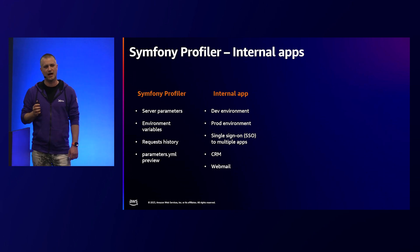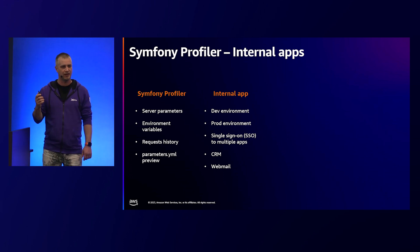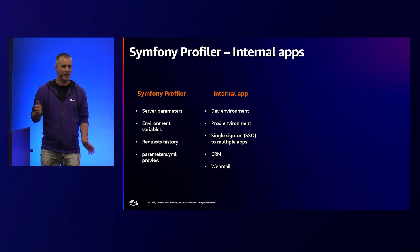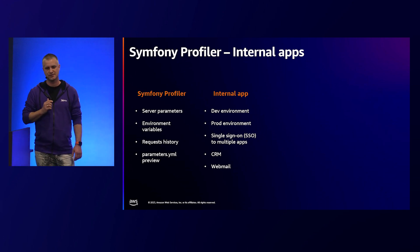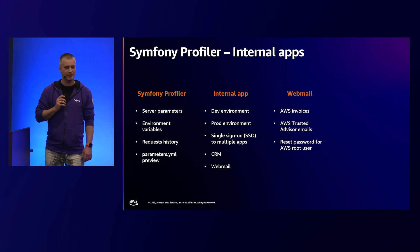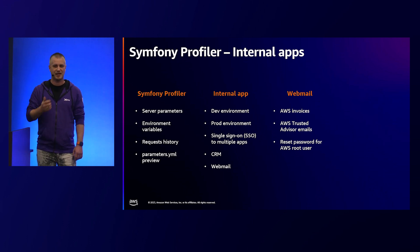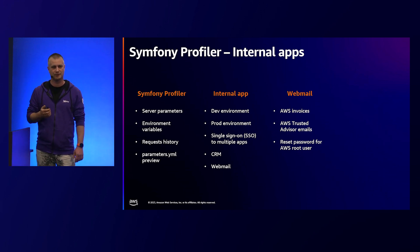It was some internal app, and the app had many tiles to click. It worked like SSO — I clicked one tile and it opened a CRM for that company. I clicked another one: webmail. In webmail, I was looking for AWS. There were many emails from AWS, like invoices and Trusted Advisor alerts. This gave me an idea that this email might be a root user email for someone's AWS account.